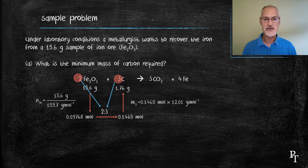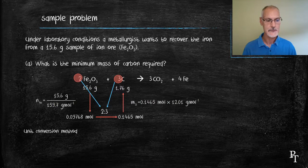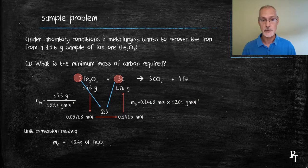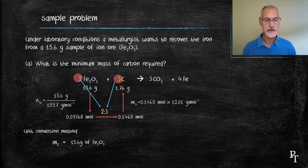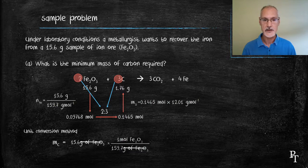Sometimes this can also be presented as a series of unit conversions. I'll show you how that works. I want to determine the mass of carbon. And I begin with 15.6 grams of iron oxide. In my first step, I multiply it by 1 over the molar mass, which is the same as dividing by the molar mass. You'll notice here that the grams of iron oxide will cancel. So at the end of this first operation, I've arrived at the moles of iron oxide.